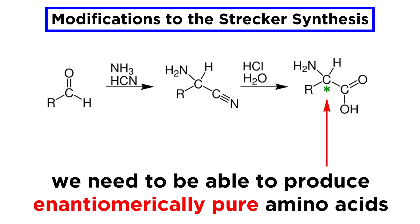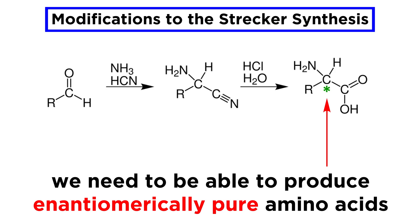Over the last 60 years or so, chemists have been able to turn the Strecker amino acid synthesis into a tool to prepare enantiomerically pure amino acids. To illustrate the concept, we will focus on a reaction recently discovered by German chemist Magnus Rupping, which is an especially efficient method.